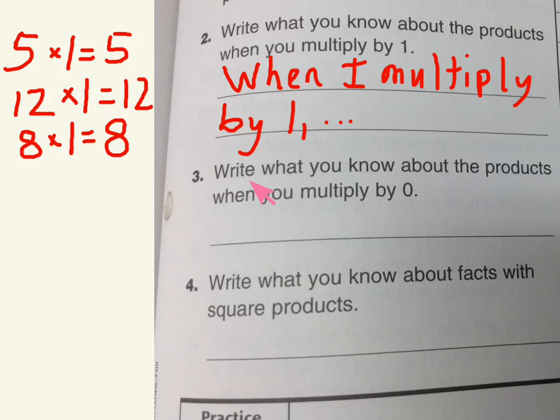Same thing when we multiply by 0. What's happening when we multiply by 0? You can write: When I multiply by 0, describe what happens.